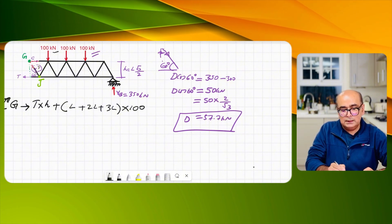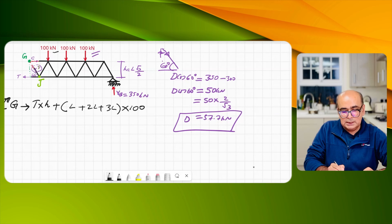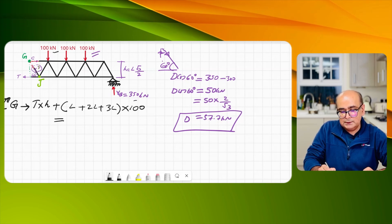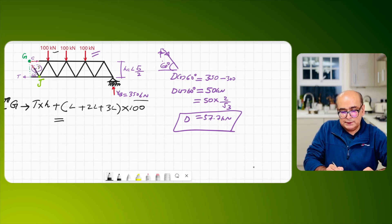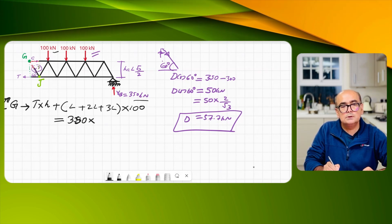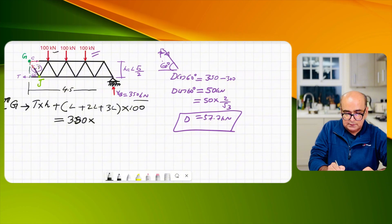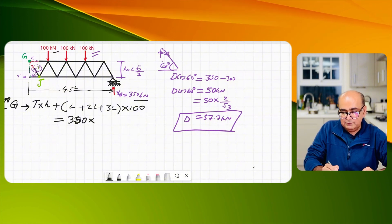So each load will have lever arm to G and that is equal to anti-clockwise moment that is created by the vertical load which is 350 times from G. I will have these four panels and half of that so I will say 4.5L.